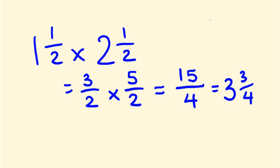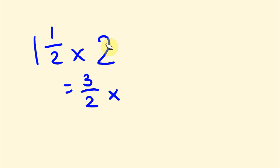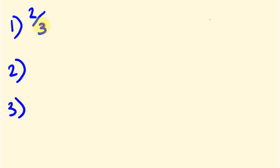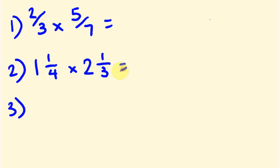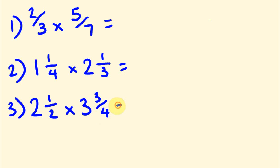I'm going to give you three examples to try on your own. The first is two over three times five over seven. The second is one and a quarter times two and one third. And the last one is two and a half times three and three quarters. Pause the video, give them a go, then we'll come back.